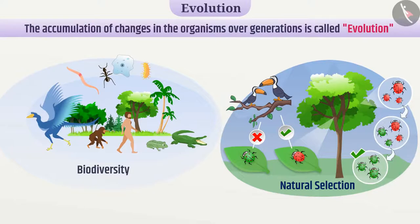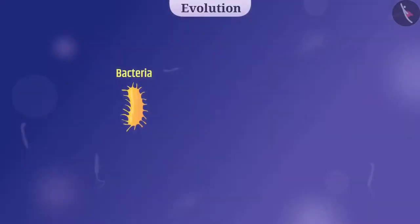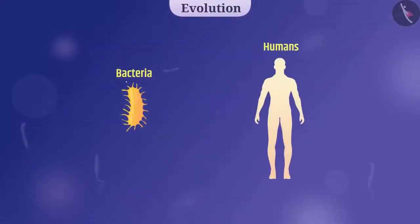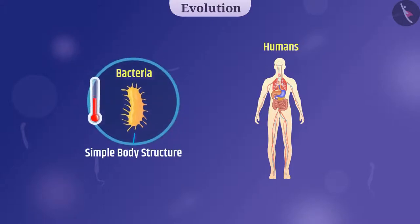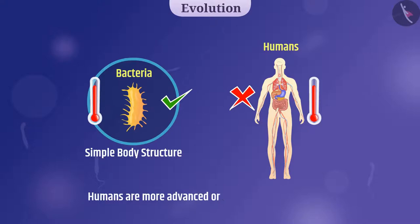Remember, evolution does not mean progress. For example, bacteria are ancient creatures as compared to humans. Bacterial body structure is much simpler than human body structure, but bacteria can survive in extreme heat — however, humans can't. So, would it be fair to say that humans are more advanced or evolved than bacteria? Discuss this with your friends.